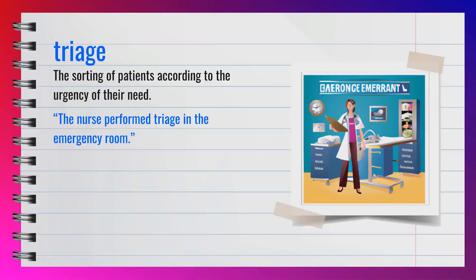The word triage, spelled T-R-I-A-G-E, is a noun. Synonyms include sorting and prioritization. For example, the nurse performed triage in the emergency room. Triage is the sorting of patients according to the urgency of their need.